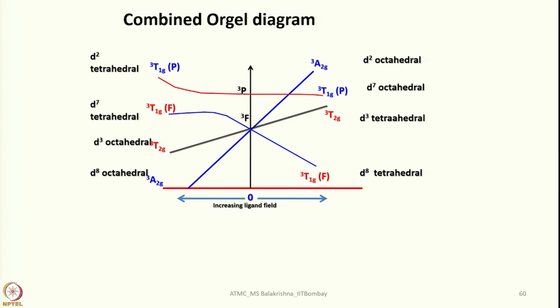In this Orgel diagram you can notice that the levels go slightly upward or downward, with a very similar symmetry overall. For D2 octahedral, D7 octahedral, D3 tetrahedral, D8 tetrahedral on one side, and D8 octahedral, D3 octahedral, D7 tetrahedral, D2 tetrahedral on the other side — exactly opposite behavior occurs. With just two Orgel diagrams we can explain all d-d transitions except for D5, D0, and D10.